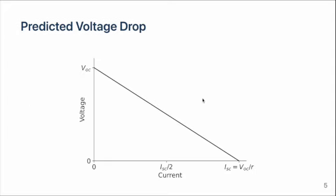When we plot that voltage versus the battery current, we see a graph where the voltage starts at the open circuit voltage and falls to zero at the short circuit current. The slope of this line is equal to the internal resistance.